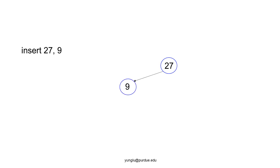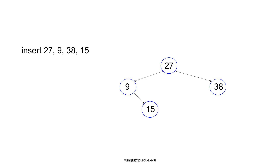If we start from nothing, the first inserted number will be the root of the tree. The next number is 9. It is the left child of 27 because 9 is smaller than 27. The next number is 38. It is greater than 27, so 38 is the right child of 27. The next number is 15. 15 is smaller than 27, so it should be on the left side of the root. We compare 9 with 15. 15 is larger and it becomes the right child of 9.